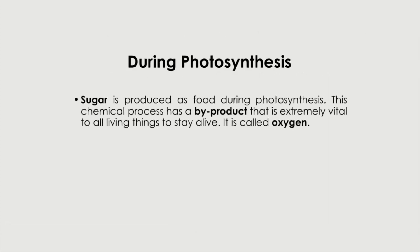During photosynthesis itself, sugar is produced as food during photosynthesis. This chemical process has a byproduct that is extremely vital to all living things to stay alive and this is called oxygen. The two things that are actually produced during photosynthesis would be sugar and oxygen. The term byproduct means a secondary product. Sugar is the primary product of photosynthesis.